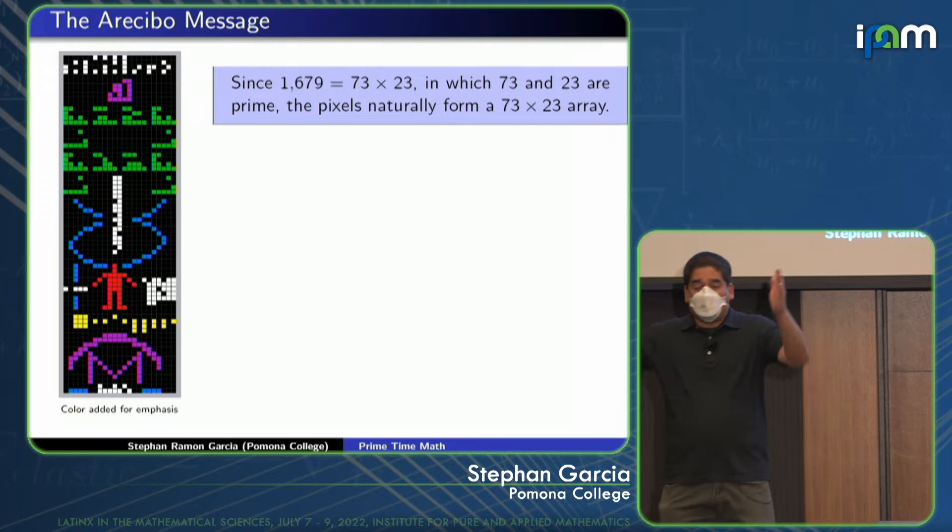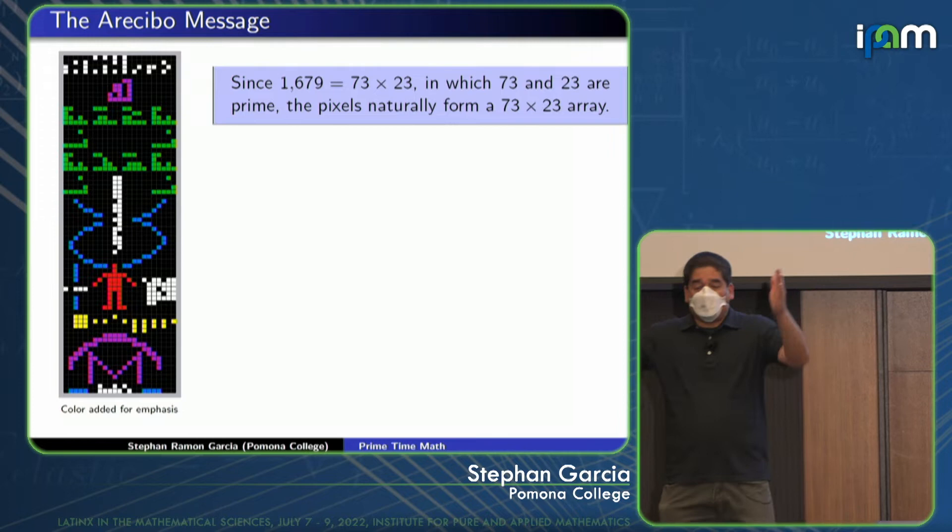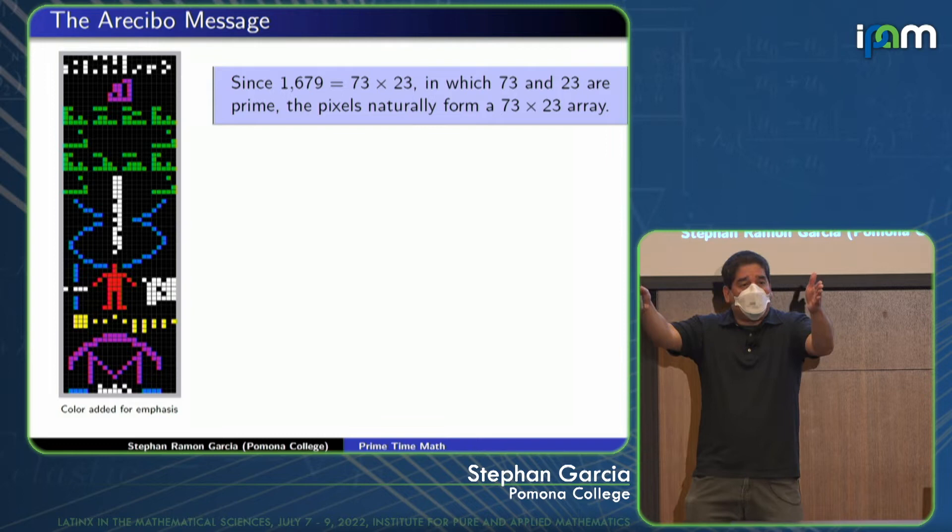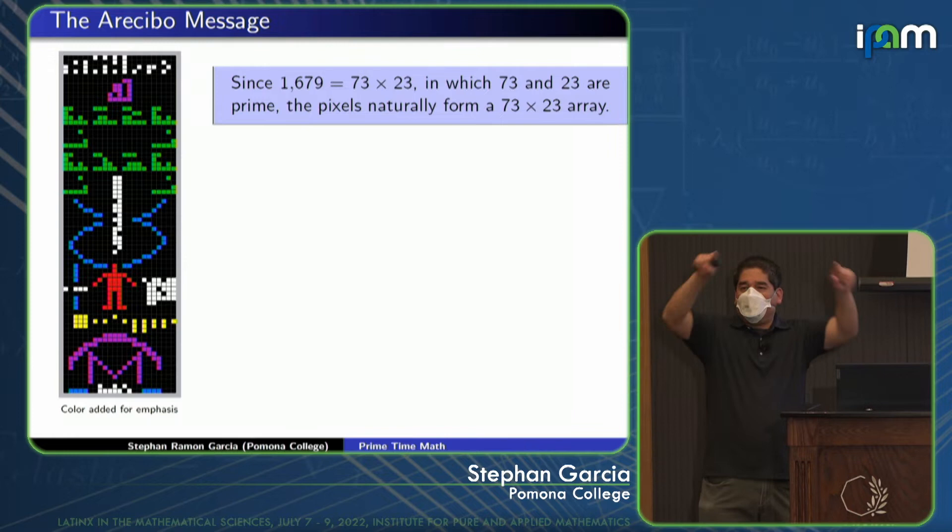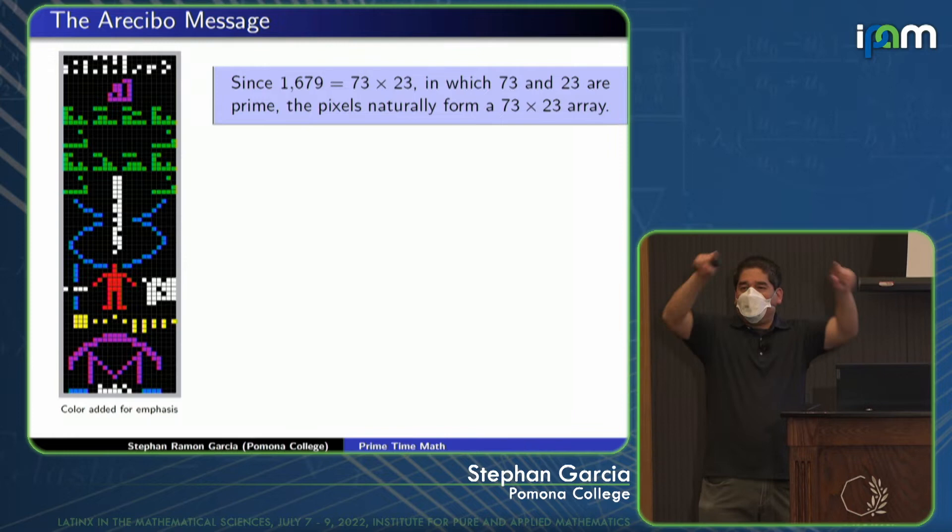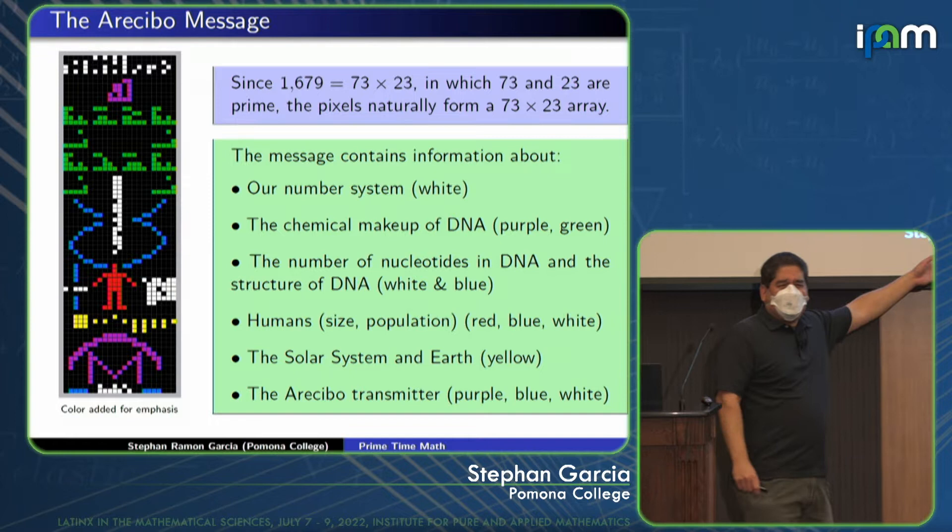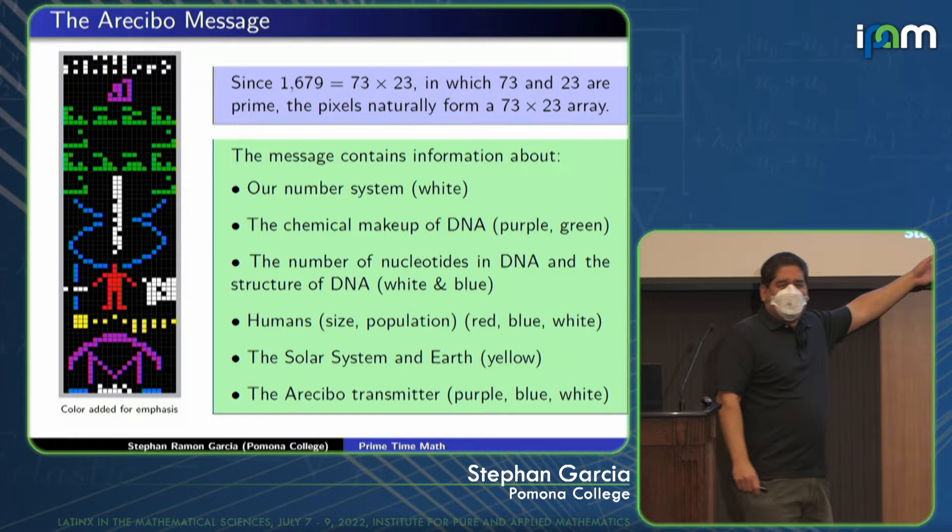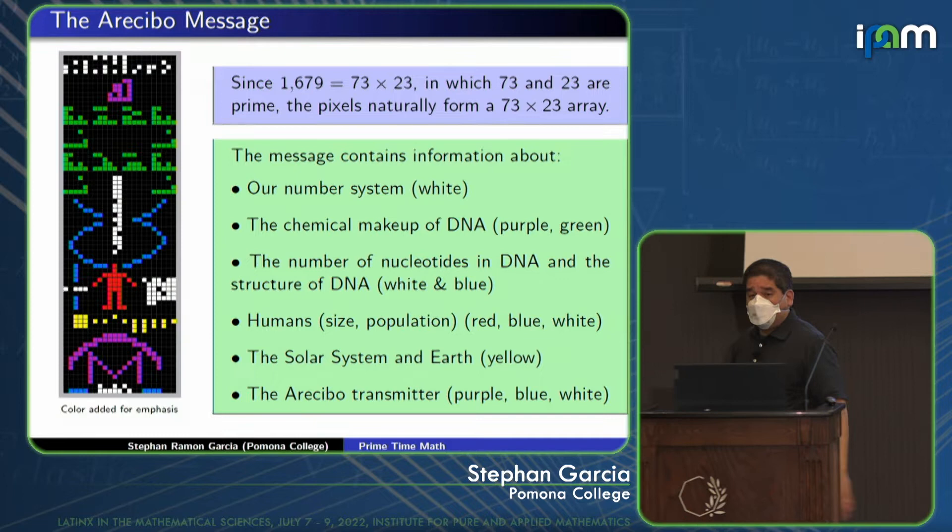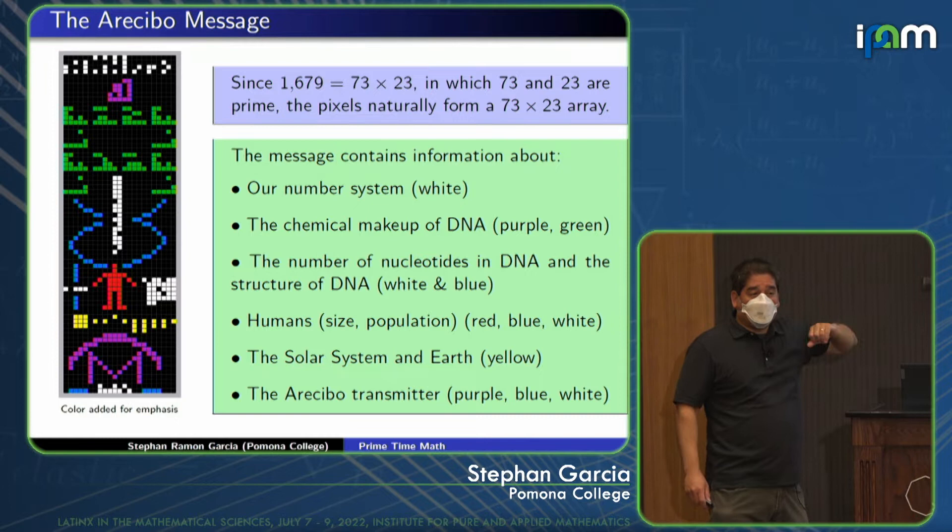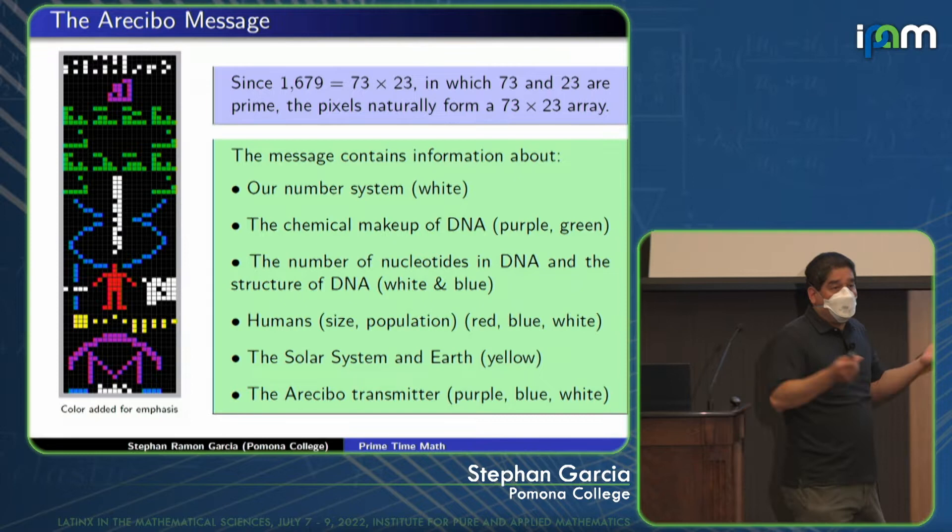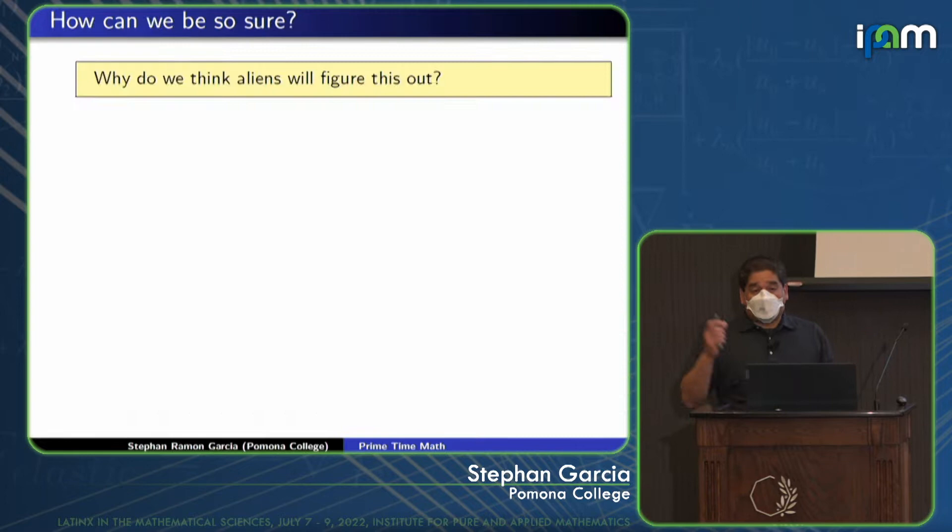Here's the message that was sent. 1,679 factors as 73 times 23. Why do we pick that? Well, because if I keep sending this block of 1,679 bits, that's going to suggest to the alien that I look at that block as the message. And I say, well, hey, strange, that factors as 73 times 23. What does that mean? So it doesn't take a great leap of imagination to say, well, why don't I plot these bits in a grid that's 73 by 23? And when you do that, you get this picture. Color has been added for emphasis because this would have been a black and white image. It's pretty pixelated, but that's what you could do in 1974. We could do something much better now. But the point is, we have information about our number system. That's the stuff there in the white. Chemical makeup of DNA and some of our biology because, again, the elements are numbered. They're pre-labeled for us, so that's great. And all the information that you could probably want to launch an attack and destroy us. But, again, we don't have to worry about that.